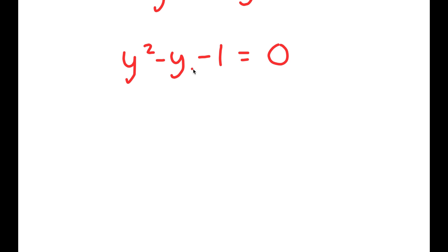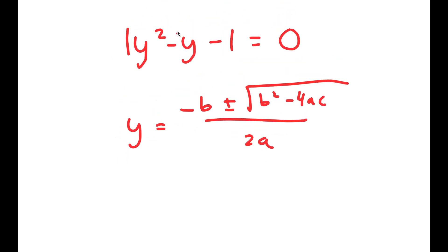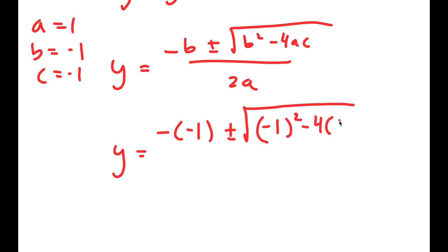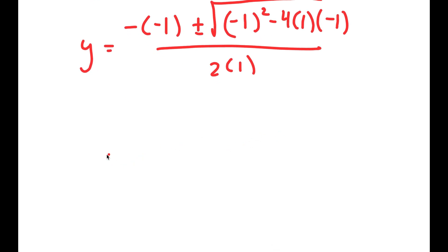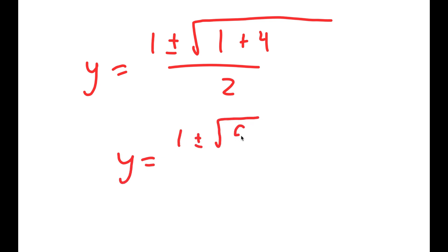What we have here is a quadratic equation. To solve this, I'm going to use the quadratic formula, which is negative b plus or minus the square root of b squared minus 4ac all over 2a. In this case, a is 1, b is negative 1, and c is negative 1. So I get y equals negative of negative 1 plus or minus the square root of negative 1 squared minus 4 times 1 times negative 1, all over 2 times 1. This is equal to 1 plus or minus the square root of 1 plus 4 over 2, which is equal to 1 plus or minus the square root of 5 over 2.